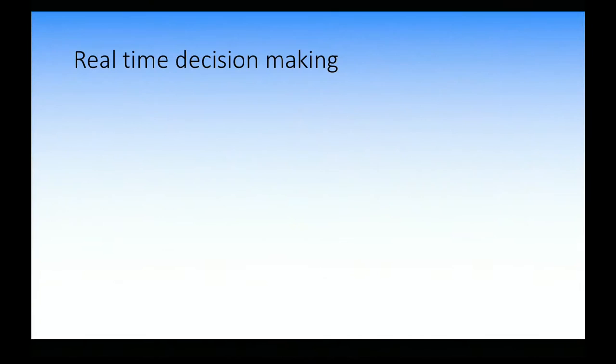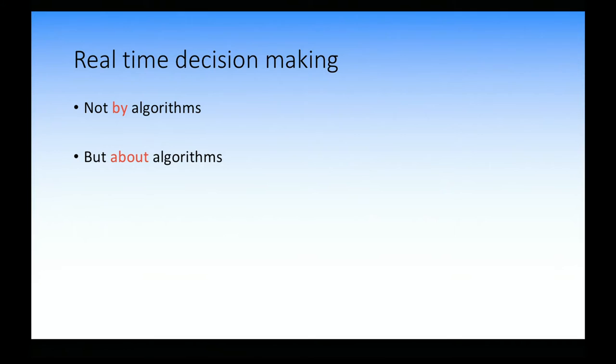So real-time decision-making — that's the title of the workshop. Most of the talks we've heard are decision-making by algorithms. This talk is not about decision-making by algorithms, but decision-making about algorithms. I'll present two theoretical models. They're a good theoretical framework, but a little bit hollow because there are not that many great examples yet. So that's a perfect time to think about these models — there's a lot to be done here.